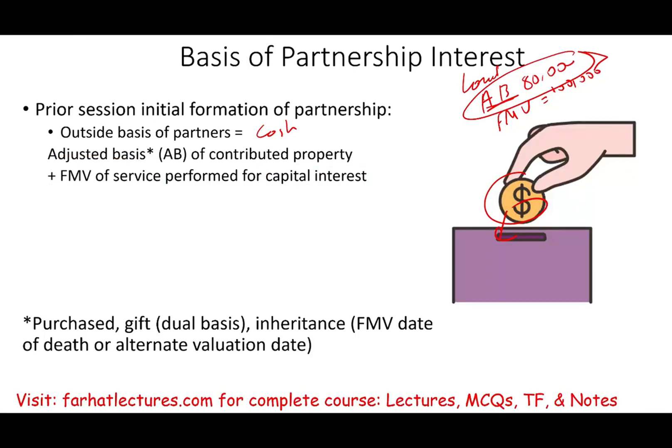What we did not discuss in the prior session — we kept it simple — is what happens if you contribute a property that carries a mortgage with it, carries a debt? We know the adjusted basis is used. What do we have to do when the property has a liability attached?